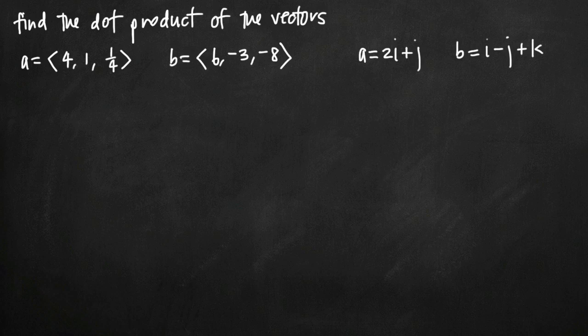Today we're going to be talking about how to find the dot product of two vectors. In this video, we're going to be doing two separate problems. In the first problem, we have two vectors a and b. The first is the vector a equals 4, 1, 1 fourth. The second vector is 6, negative 3, negative 8. And we need to find the dot product of these two vectors.